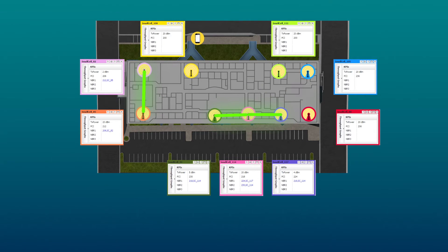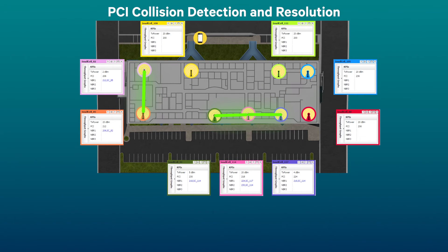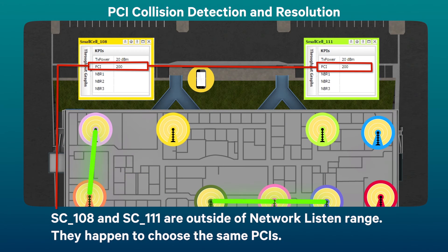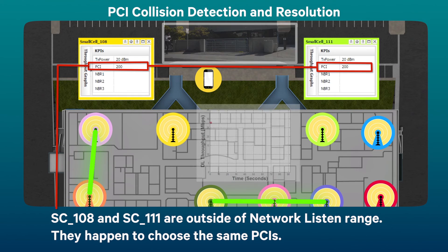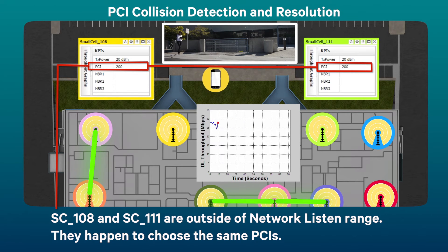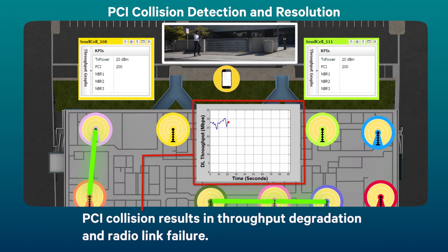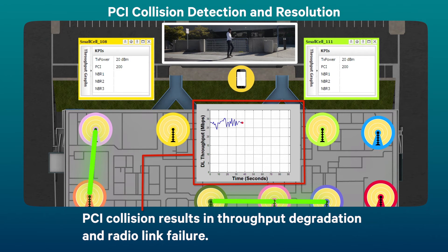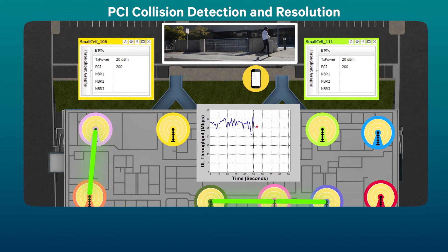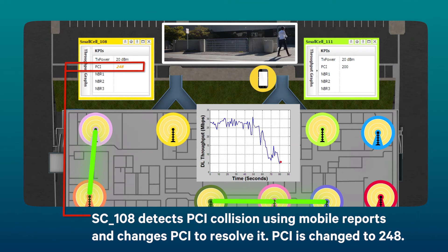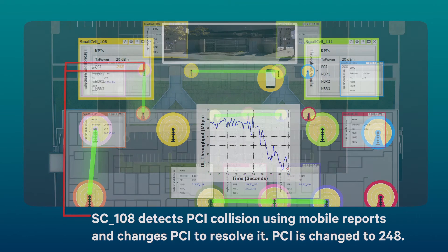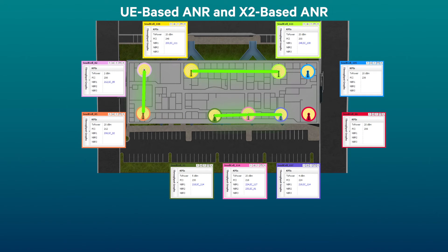In addition, Ultrasound uses mobile user reports to resolve PCI collision. Small cells 108 and 111 can't detect each other and happen to choose the same PCI. As a result, throughput degradation and radio link failure can be observed by a mobile user due to PCI collision. Via Ultrasound, small cell 108 detects PCI collision and changes its PCI. ANR based on mobile user reports and X2 work together for neighbor discovery.